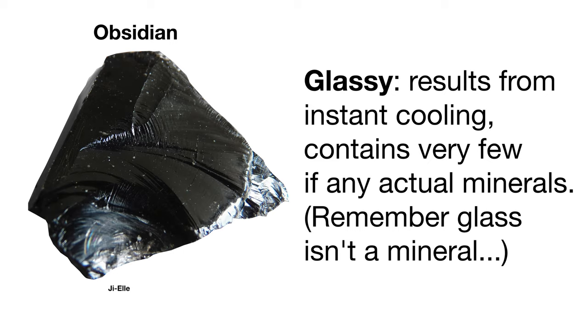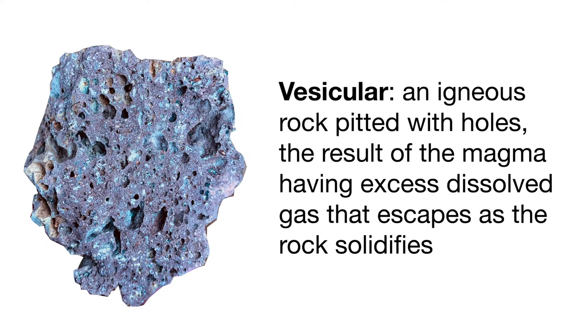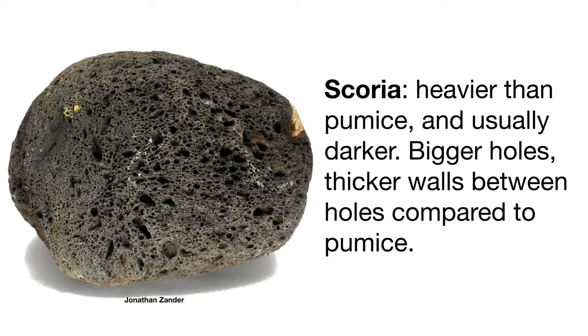There are some other words we can also use. Some igneous rocks are glassy — they have a texture very similar to dark glass and may have very few, if any, visible mineral crystals. One very specific and cool type of igneous texture is vesicular. Vesicles are small holes left in an igneous rock by escaping gas bubbles. These extrusive volcanic rocks can be subdivided into two main groups: pumice, which is very light and floats, and scoria, which has larger vesicles and is a bit darker and denser than pumice. Okay, enough texture talk — let's dive into a magma and see what happens as crystals begin to form.